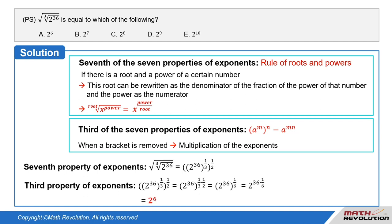And using the third property of exponents, we get 2 to the power of 36 whole to the power of 1 over 3 whole to the power of 1 over 2 is equal to 2 to the power of 36 whole to the power of 1 over 3 times 1 over 2.